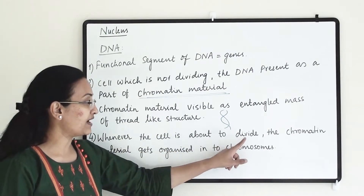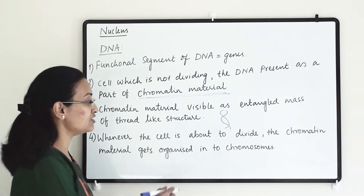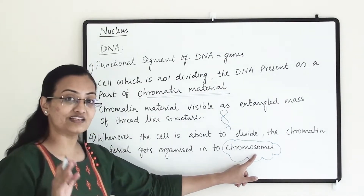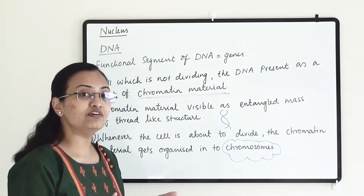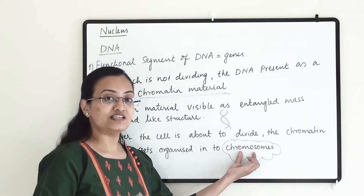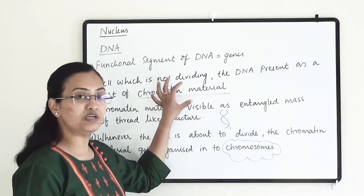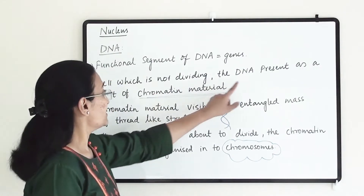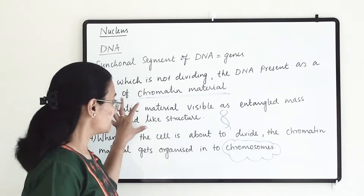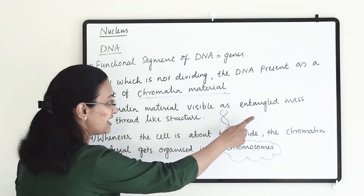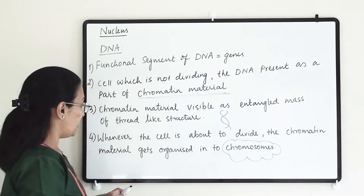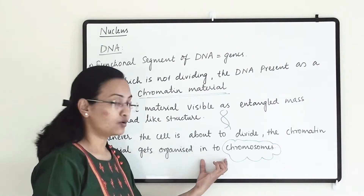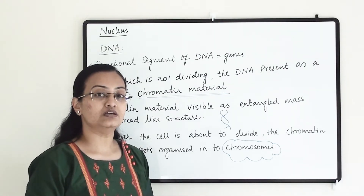Whenever the cell is about to divide, the chromatin material gets organized into chromosomes. That is why whenever the cell is about to divide, we will be able to see the chromosomes. Otherwise, we will not be able to see chromosomes separately because they will be part of chromatin material. DNA's functional segment is a gene, and DNA is present as part of chromatin material which is visible as an entangled mass of thread-like structures.